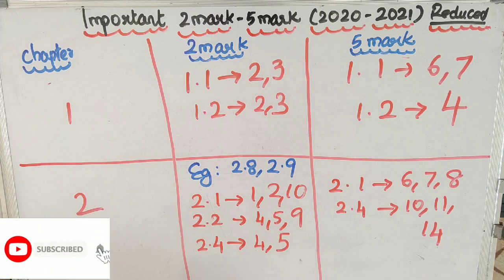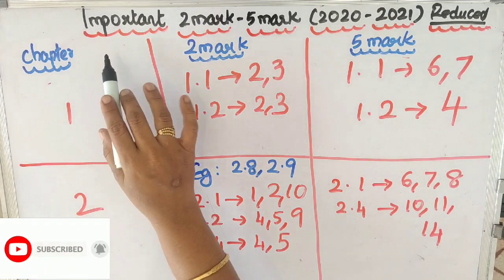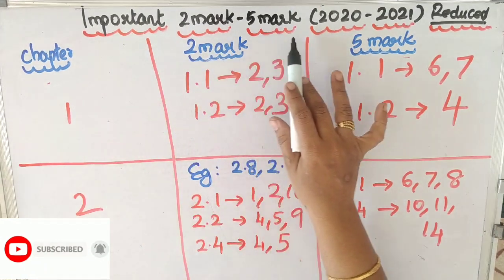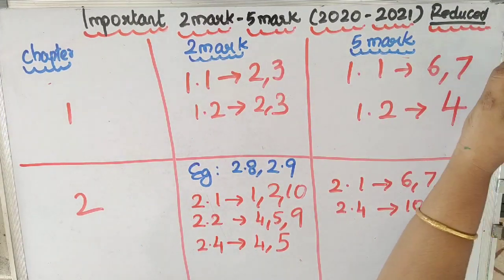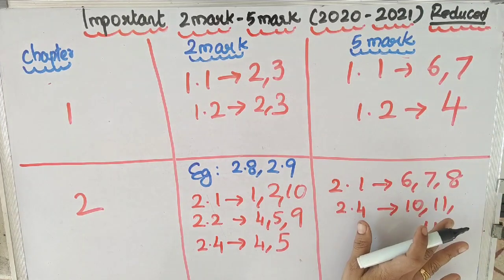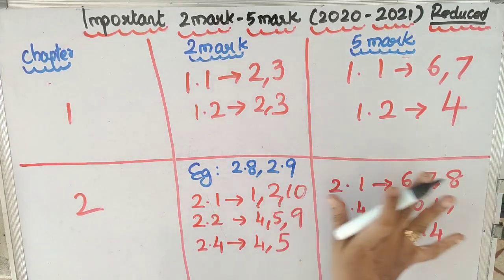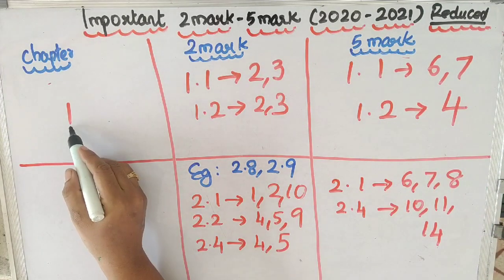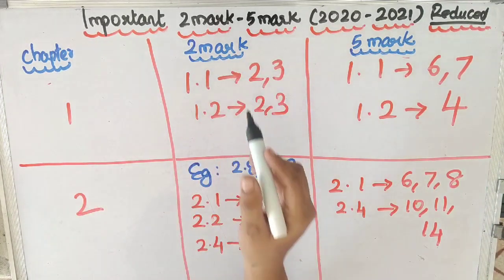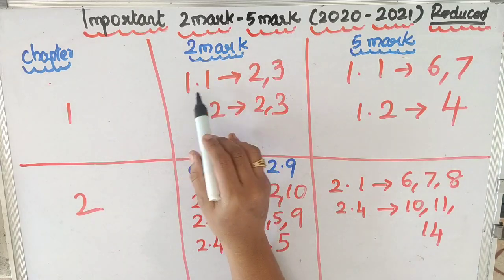Hi everyone, we are going to see the important two marks and five marks in the exam. This is the exercise example of the reduced portion. That's why you are going to learn the important part first.